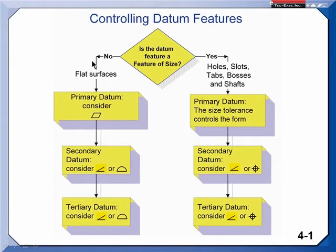If you're not dealing with a feature of size, you're generally dealing with a flat surface as a datum feature — a nominally flat surface. So as a primary datum feature, you will usually need flatness.